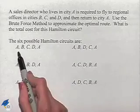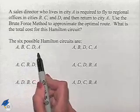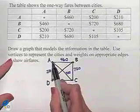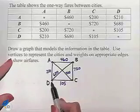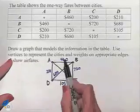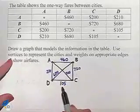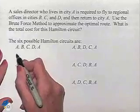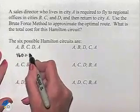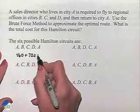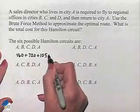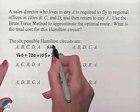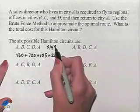Our first circuit is ABCDA, and that's going to take us around the square A to B to C to D to A. That's going to be 460 plus 720 plus 105 plus 210. This sum is going to give us a total of $1,495.